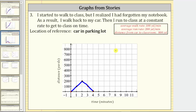Once I get my notebook, I run to class at 200 yards per minute. After five minutes, I am 200 yards from the car; after six minutes, 400 yards; after seven minutes, 600 yards; and finally after eight minutes, I am 800 yards from the car and at the classroom. This piece of the graph represents running back to the classroom after picking up my notebook.